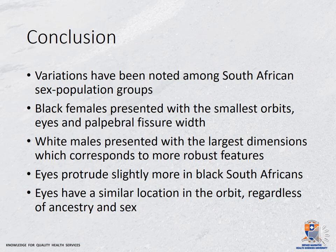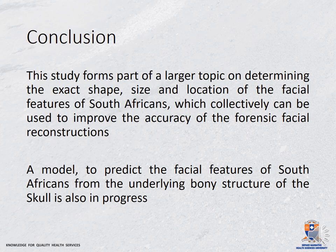To conclude, variations have been reported among South Africans across sex and population groups. Black females presented with the smallest orbits, eyes and palpebral fissure widths, while white males presented with the largest dimensions, corresponding to more robust features. The eyes protrude slightly more in black South Africans, but not significantly, and the eyes have a similar location in the orbit regardless of ancestry and sex. This study forms part of a larger project determining the exact shape, size, and location of facial features of South Africans, which collectively can be used to improve the accuracy of forensic facial reconstructions. A model to predict the facial features of South Africans from the underlying bony tissue of the skull is also in progress.